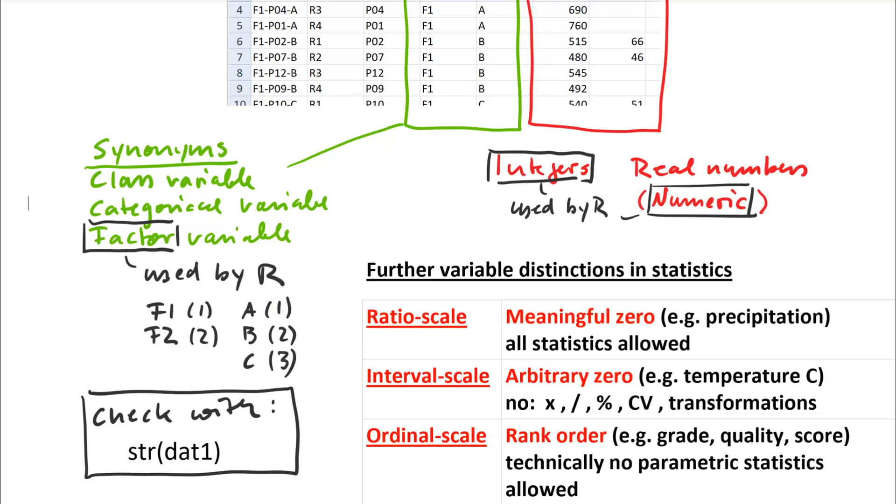And in addition to what R thinks about variables, there are actually further important variable distinctions in statistics. You have three types of numerical variables. One is ratio scale. Then you have interval scale and ordinal scale. And what distinguishes ratio scale variables is that they do have a meaningful zero. So just to give an example, we have precipitation here. If I have zero precipitation, that means I got nothing. So for those variables, all types of statistics are allowed.